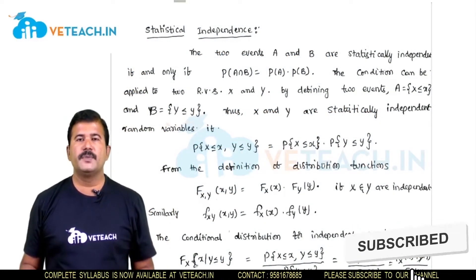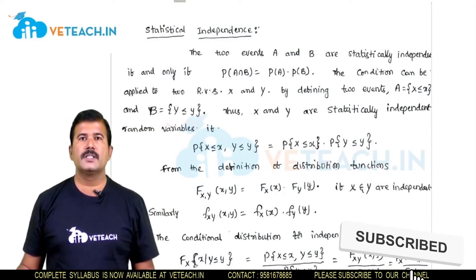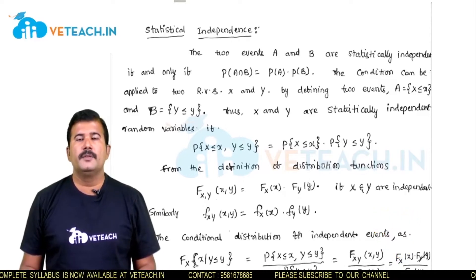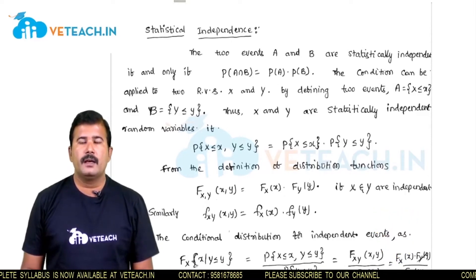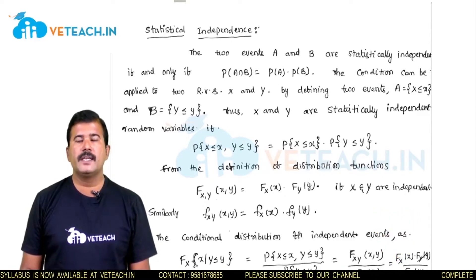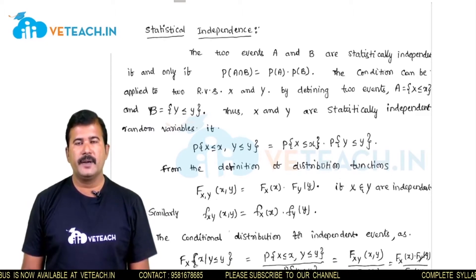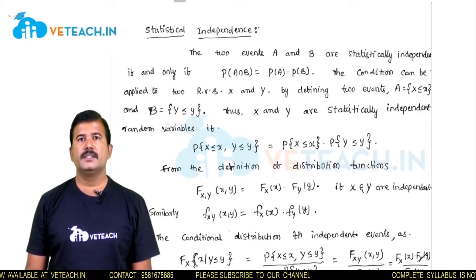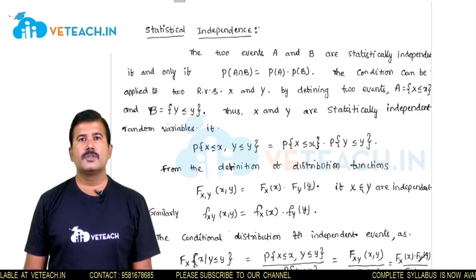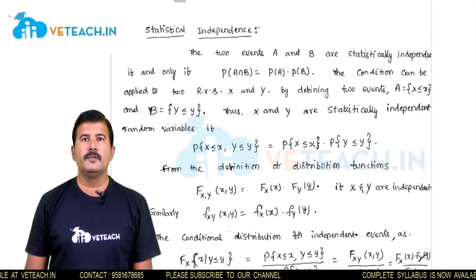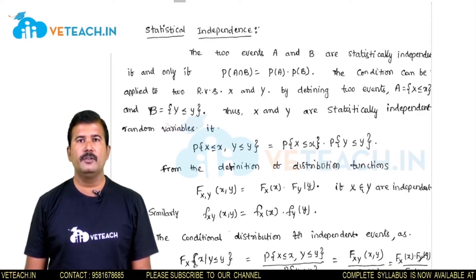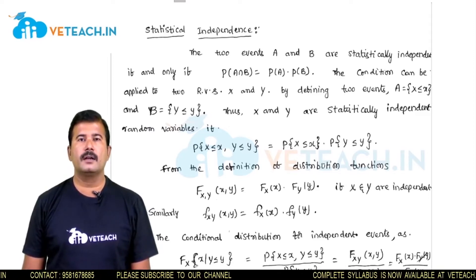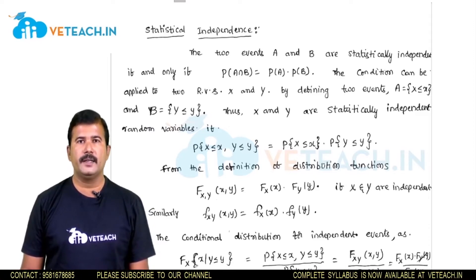Welcome to WeTeach. In this video I am going to discuss about the statistical independence of two random variables. If A and B are two events and if we say A and B are statistically independent, it means the probability of A intersection B, that is the joint event, must be equal to the product of individual probabilities — probability of A into probability of B. Then A and B are called statistically independent events.